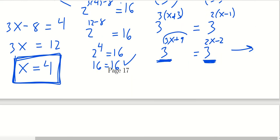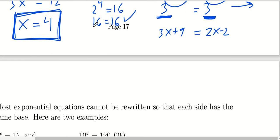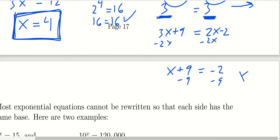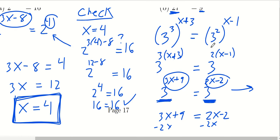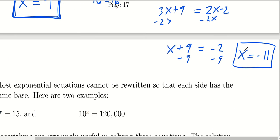Setting the exponents equal: 3x plus 9 equals 2x minus 2. To solve, subtract 2x from both sides to get x plus 9 equals negative 2. Then subtract 9 from both sides, and we get x equals negative 11. You can plug it back in to verify — it does produce a true statement.